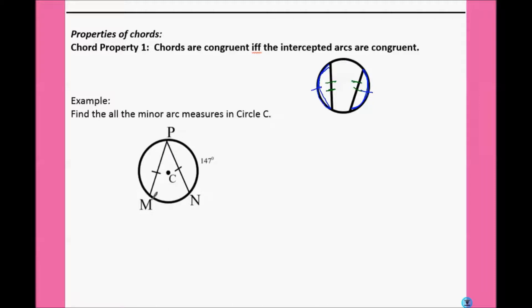So here, PN is congruent to PM, which means this arc PN would be congruent to arc PM, so we know arc PM's measure would also equal 147 degrees. And since it wants us to find all the minor arcs, we also need the measure of MN. Our whole circle is 360 degrees, minus 147 for MP, minus 147 for PN, leaves us with 66 degrees for the measure of MN.